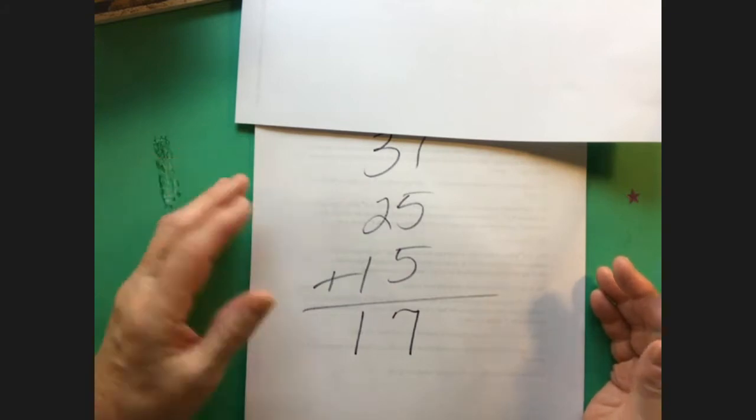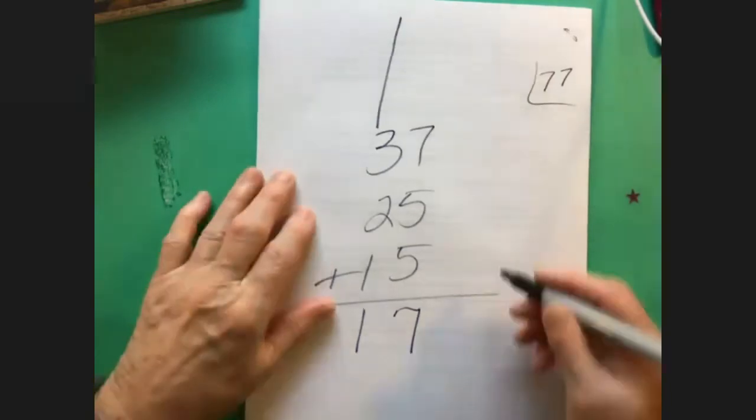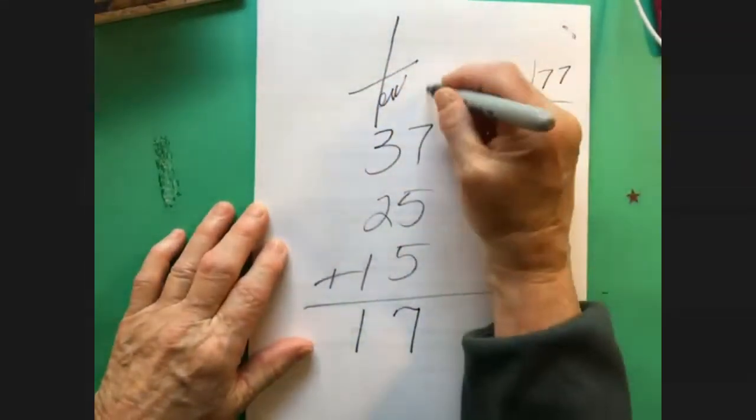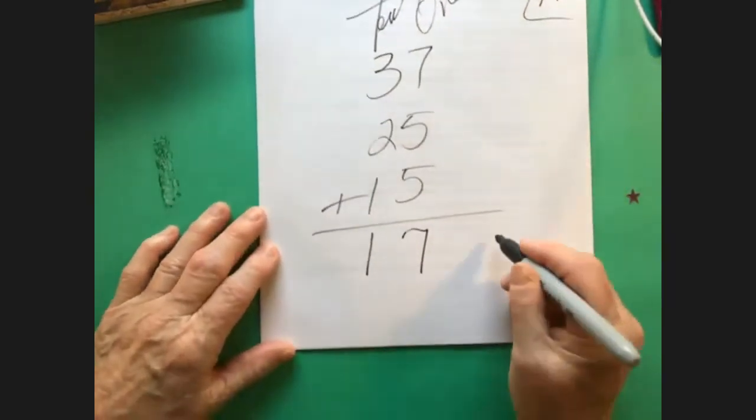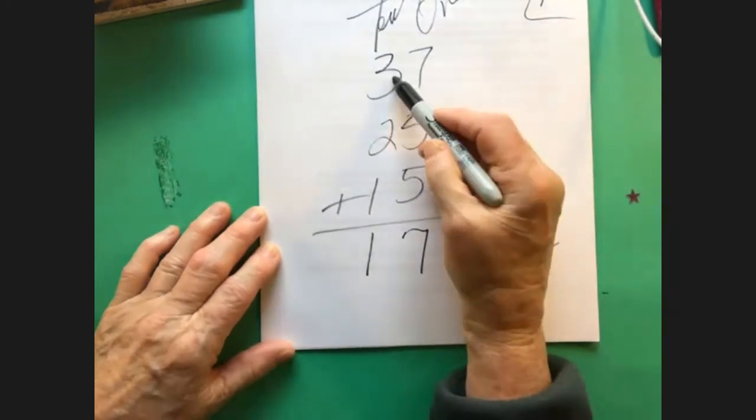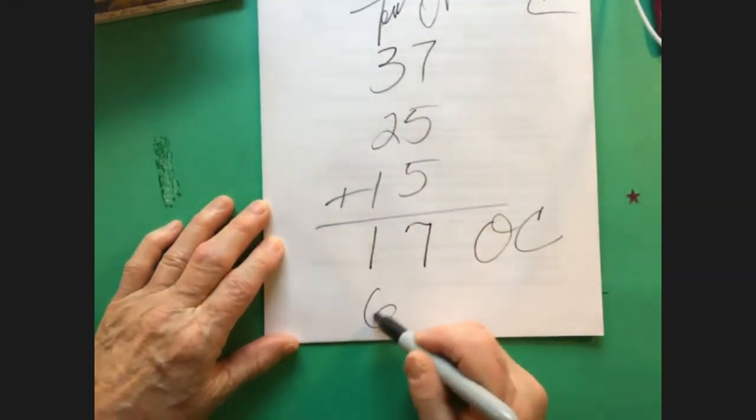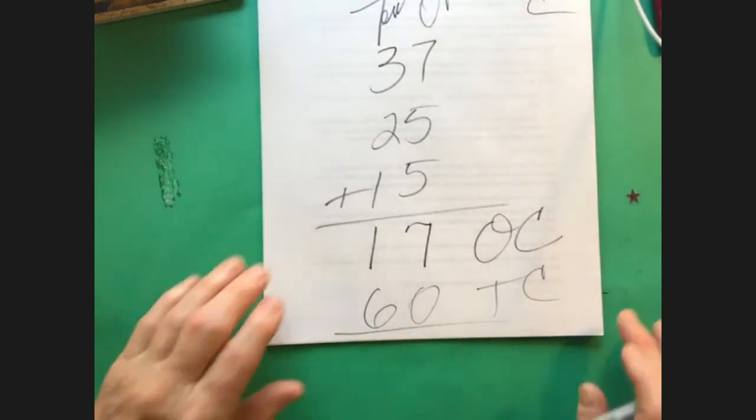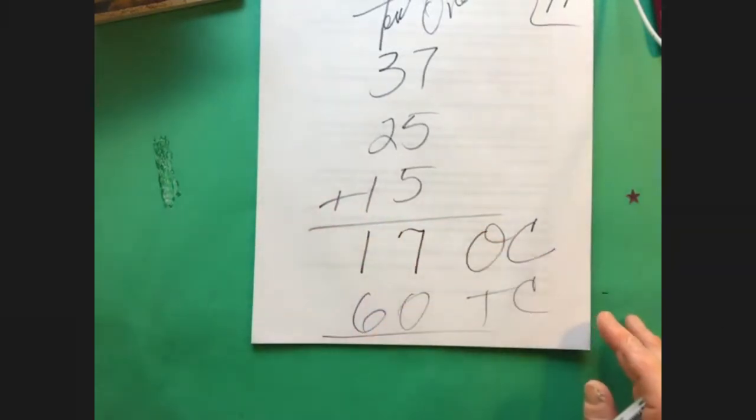This came from the ones column, here we go, this is the tens column. Let's make that a T. Here's the tens column, here's the ones column. I can add the ones first, I got the 17 that came from the ones column. This is a 30 not a 3 - 30, 20, 50, 60. Here's 60, this is the tens column and there's my answer, 77. This is just real life if you think about it.